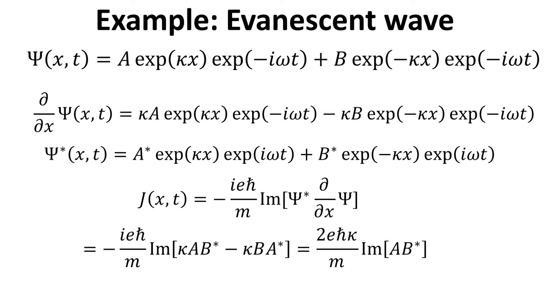With some algebra, we can show that the current density is proportional to kappa, and the product of the amplitudes A and B. This shows that tunneling current is only possible if both A and B are finite. This only occurs for a sufficiently thin tunneling barrier.